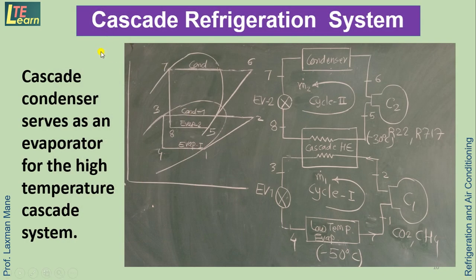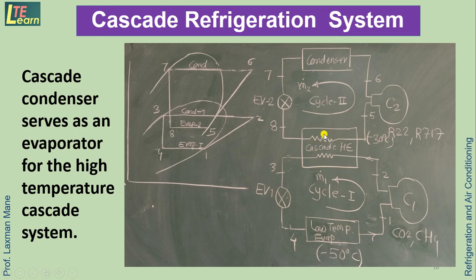The next type of multi-pressure system is the cascade refrigeration system. In this system, two vapor compression cycles are combined: the condenser line (2-3) of the low-temperature VCC is connected to the evaporator line of the high-temperature VCC. This combined heat exchanger is called the cascade condenser. It serves as a condenser for the low-temperature cycle and as an evaporator for the high-temperature cycle.